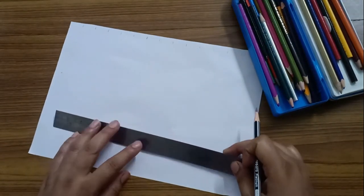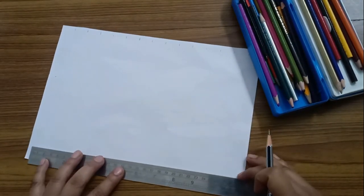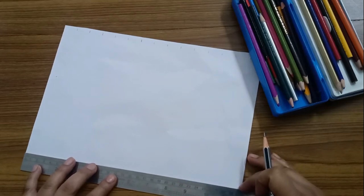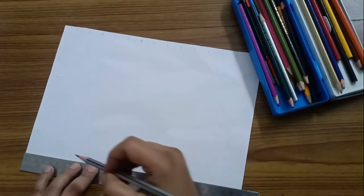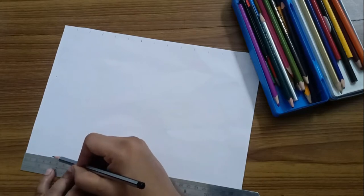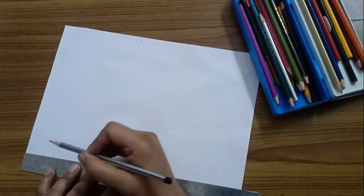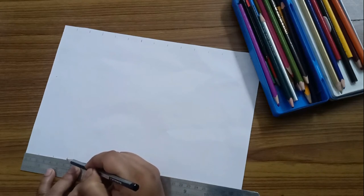Now do the same exercise on below this paper also. Same way. Let's do 2 table. 2 1s are 2, 2 cm mark. 2 2s are 4. At 4 we are putting a mark. 2 3s are 6.